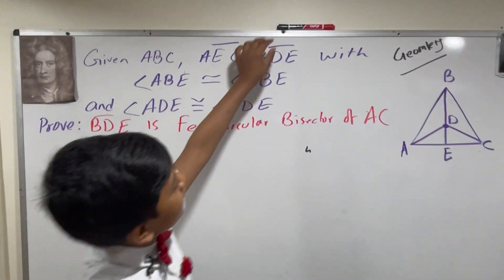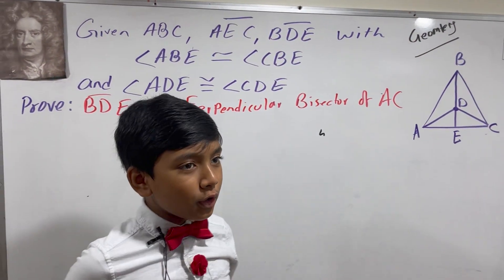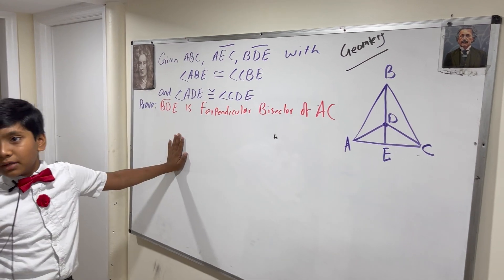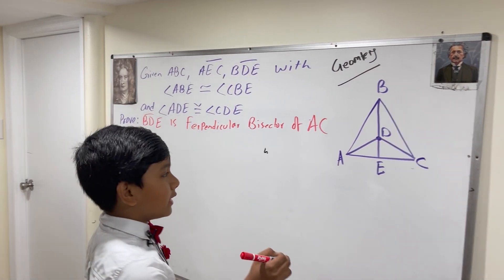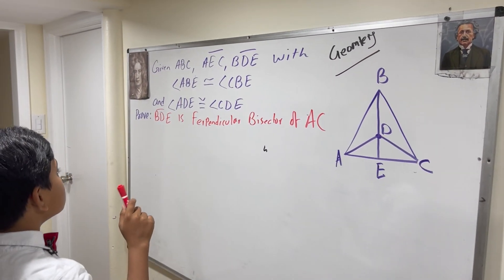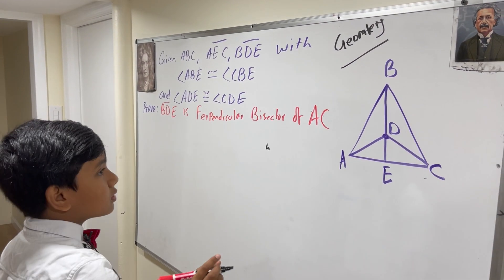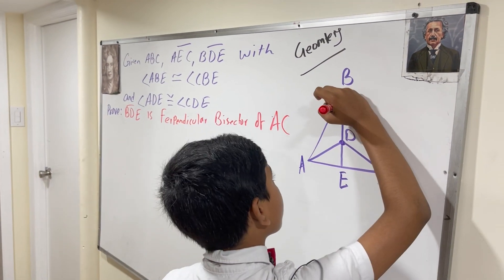A, C, B, D, E with geometry. Let's just write down what we observe. So angle ABE and angle CBE are congruent.